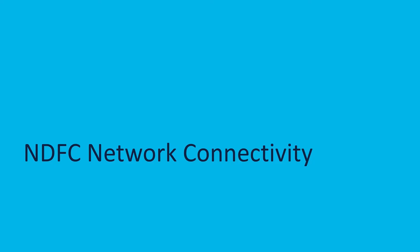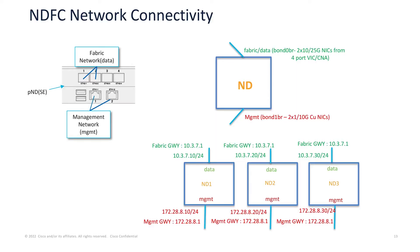Now let's look at the network connectivity. There are basically two kinds of interfaces in the Nexus Dashboard node, whether physical or virtual: the ND management interface and the fabric or data interface. It's a requirement that the management and data interfaces must be in different subnets. The default route for all NDFC services is via the fabric interface.